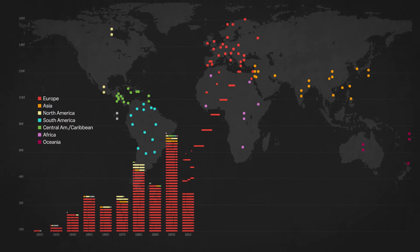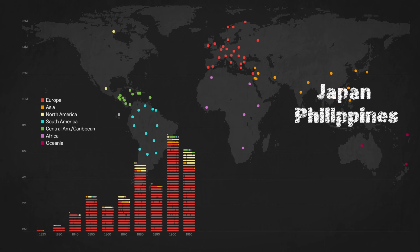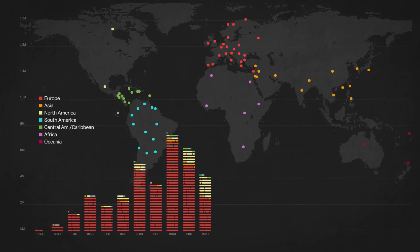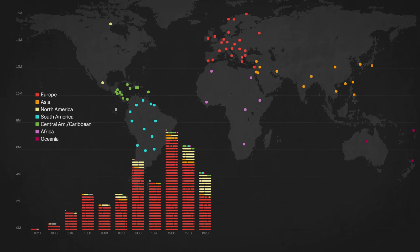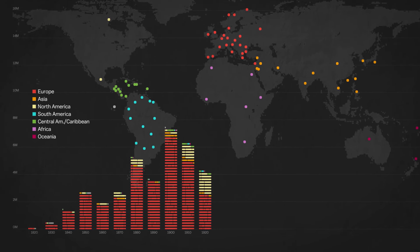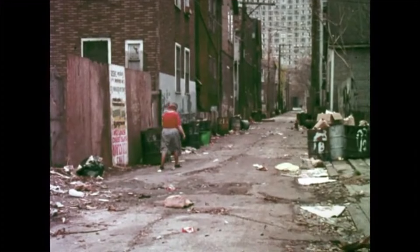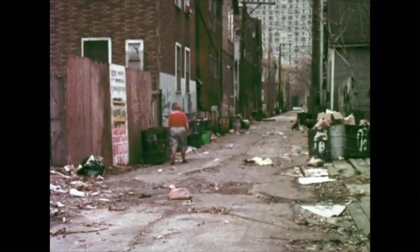In 1917, the U.S. banned immigration from Asian countries entirely, except for the Philippines and Japan. In 1921, the U.S. capped immigration based on nationality, which severely limited the ability to immigrate to the U.S. for people not from the Western Hemisphere or a country with older roots in the U.S.